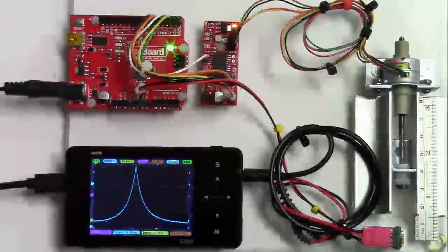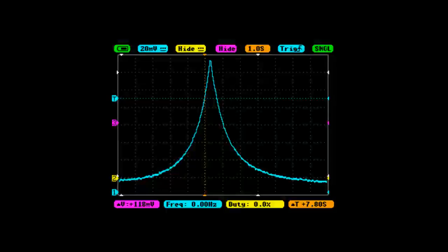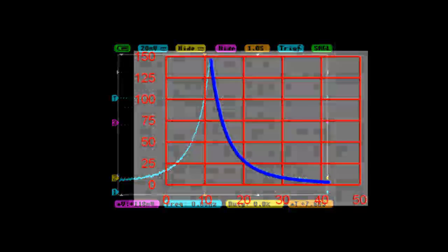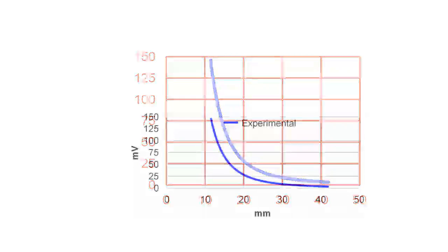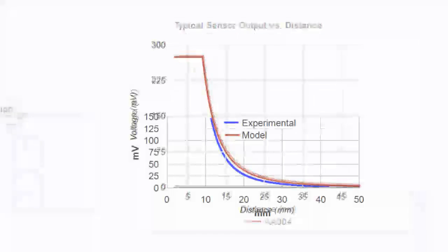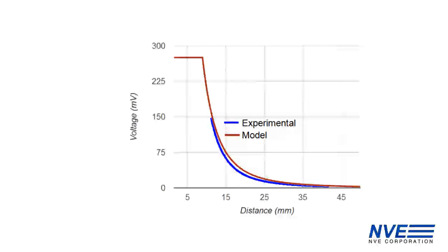The sensor output is collected by a mini oscilloscope. Here's the sensor output versus distance. If we adjust the scale to match the graph from the app, it's a pretty close fit.